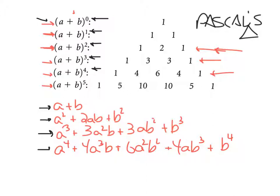One more pattern: if you look at the exponents on each term — like that's a two, that's one and one, that's two — the exponents on each term add up to be the main exponent. Look at the cube: three; two and one is three; one and two is three; three. Down here for the fourth: four; three and one; two and two; one and three; four — they always add up to the main exponent. And one more: the exponent on the second term is one less than the term you're looking at. Like b squared is the third term, b cubed is the fourth term, b to the first is the second term.